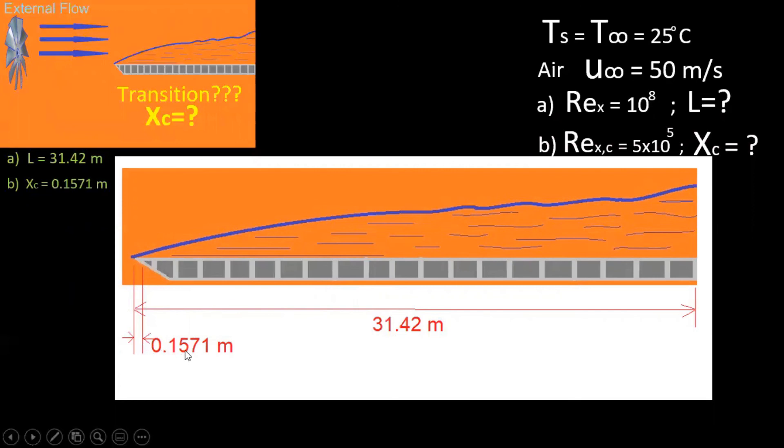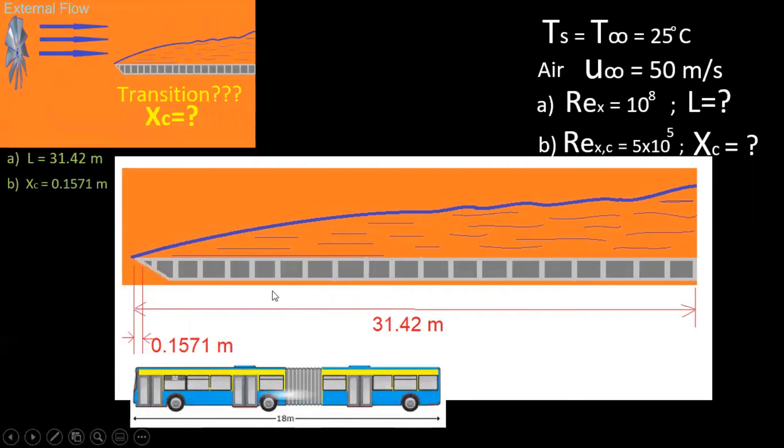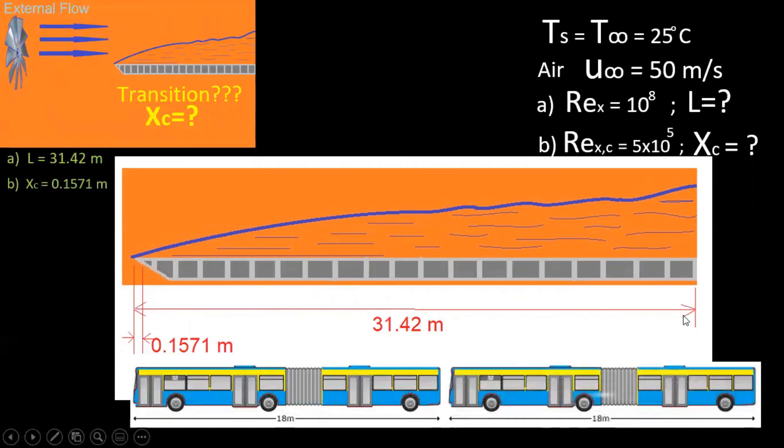So just to compare length, this would be almost the length of two articulated city buses, and the transition would occur right here in the beginning. Basically, I know it probably wouldn't even pass the bumper.